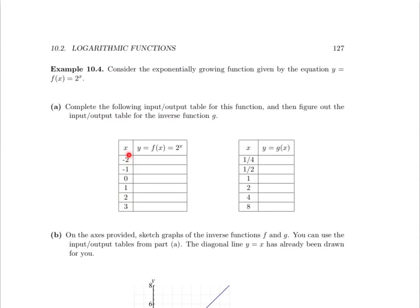We have six different values for the input variable x. If we substitute negative 2 into the function, we get 2 raised to the negative 2 power. Recall that this is defined to be 1 over 2 squared, which is 1 fourth. So when x is negative 2, the output y is 1 fourth. Now substituting negative 1, we arrive at 2 to the negative 1 power, which is 1 over 2 to the 1, which is 1 half. So when x is negative 1, the output y is 1 half.